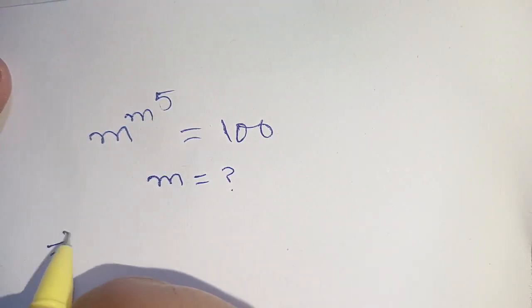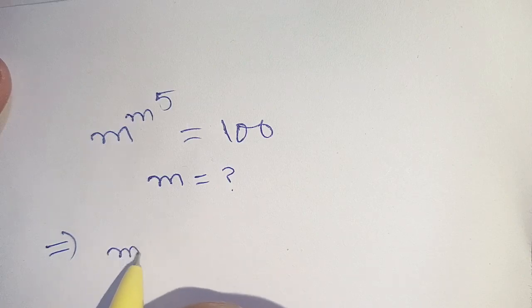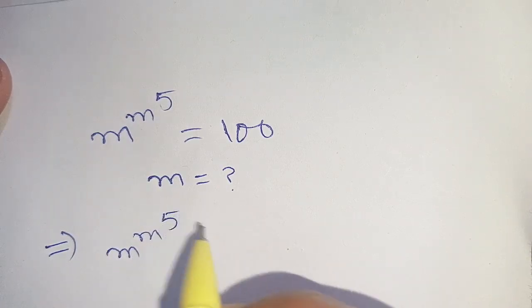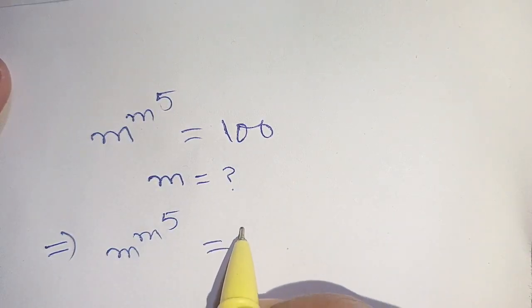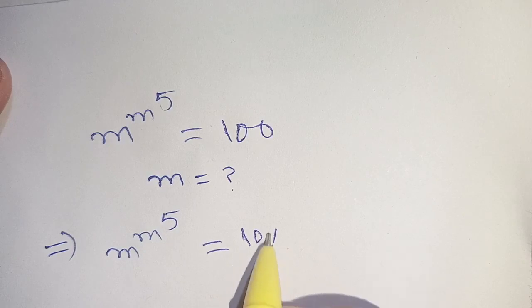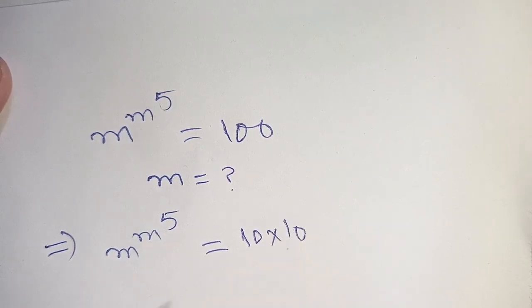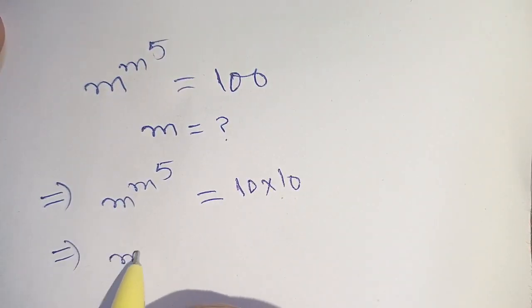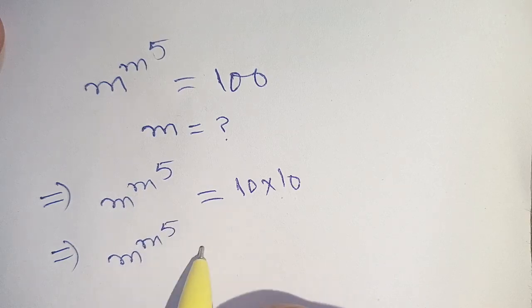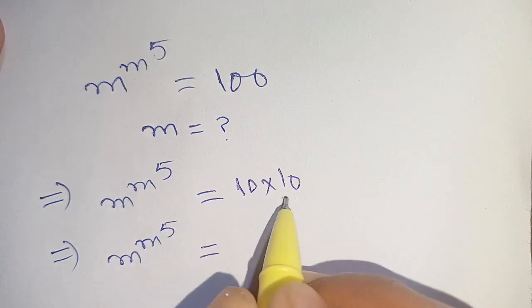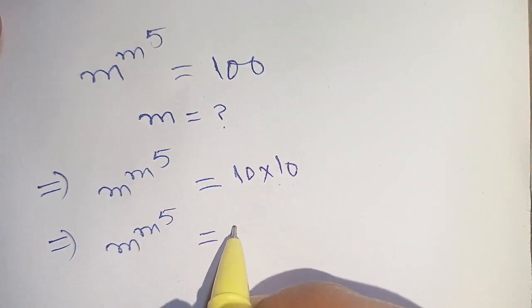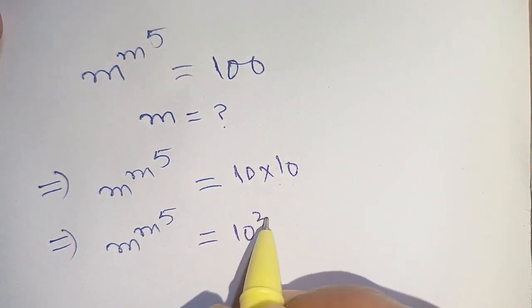We can write m raised to the power m raised to the power 5 is equal to 100 as 10 times 10. On the next step we can write this as m raised to the power m raised to the power 5 is equal to 10 times 10, which can be written as 10 raised to the power 2.